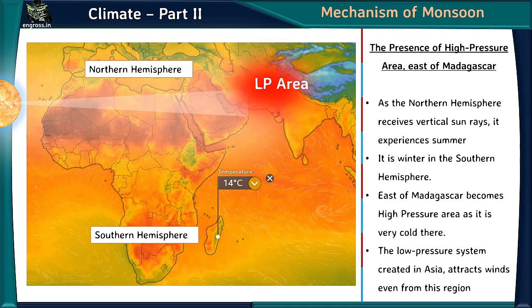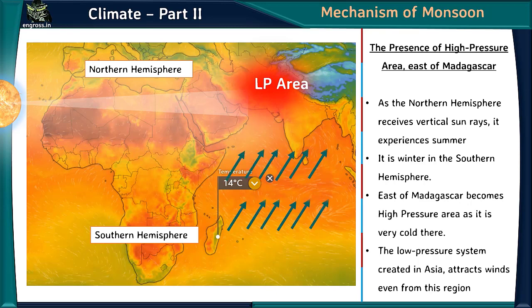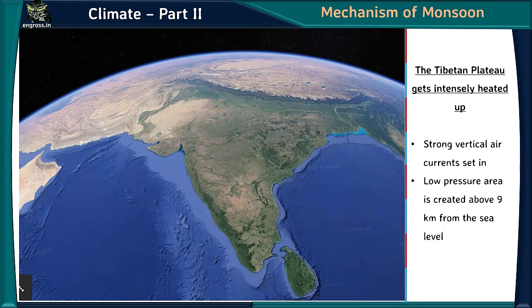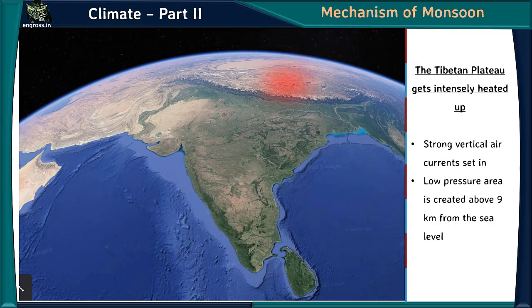Another factor is the presence of a high-pressure area east of Madagascar. As the northern hemisphere experiences summer, it is winter in the southern hemisphere, making the region east of Madagascar a high-pressure area. The low-pressure system created in Asia attracts wind even from this region. Additionally, the Tibetan Plateau gets intensely heated, generating strong vertical air currents and creating a low-pressure area above 9 km from sea level, which also attracts wind from south of the equator.